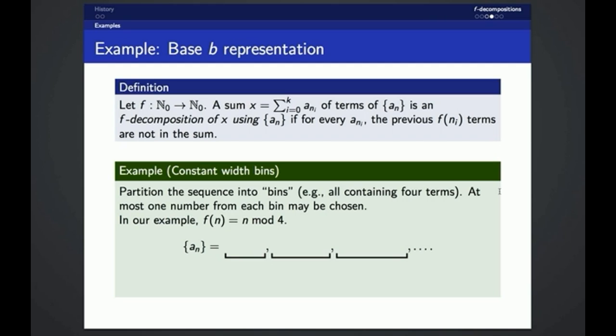Because if we look at the zeroth term and we pick the zeroth term, we don't have any restrictions on the terms before it that we can pick. There are no terms before it. If we pick the first, if we pick the term with index 1, then we're not allowed to pick the term with index 0 because it's in the same bin. If we pick the term with index 2, we can't pick the terms with index 0 or 1 because they're in the same bin.